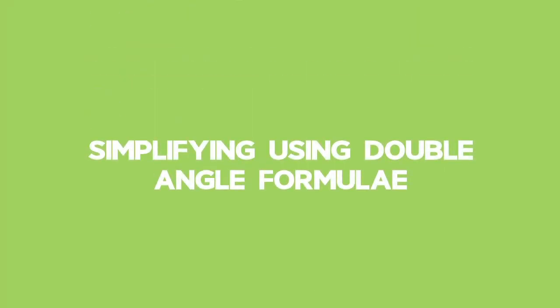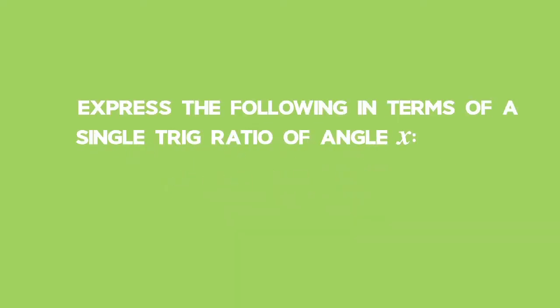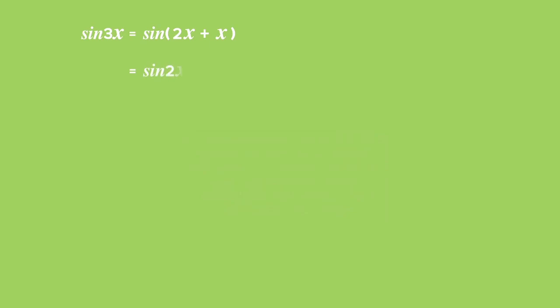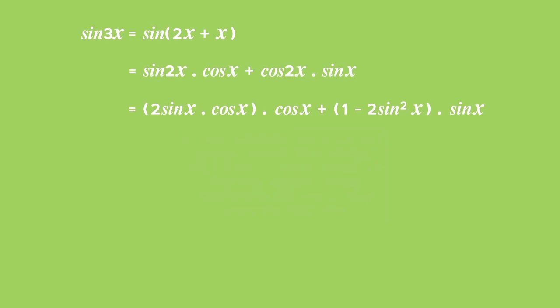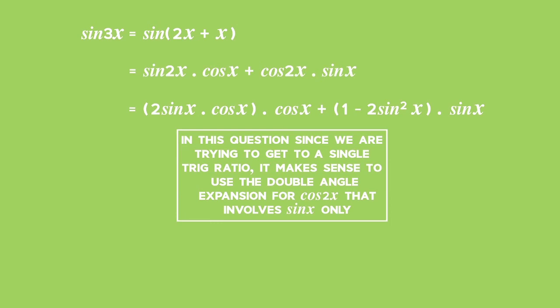Example 3: Simplifying using double angle formulae. Express sin 3x in terms of a single trig ratio of angle x. We need to rewrite the angle 3x as the sum of two angles so that we can use compound angles and simplify further. Sin(2x plus x) equals sin 2x times cos x plus cos 2x times sin x. Sin 2x can be further expanded using double angles to 2 sin x cos x. We choose the formula for cos 2x as we are trying to express everything in terms of sin x.